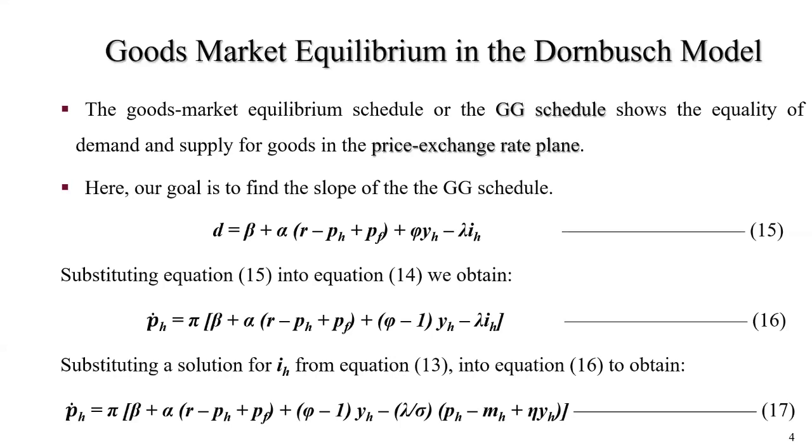Equation 15, demand is a function of aggregate demand, where beta equals exogenous expenditure, R minus PH minus PF is log of real exchange rate, YH equals domestic income, and lambda equals domestic nominal interest rate.